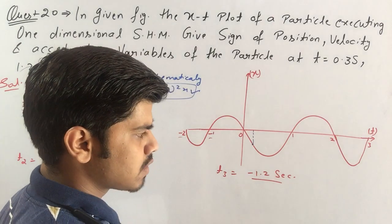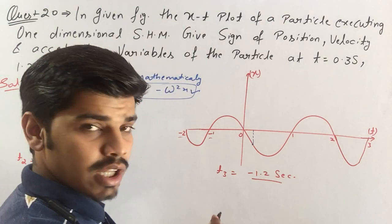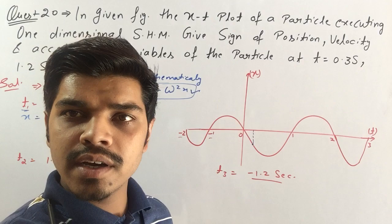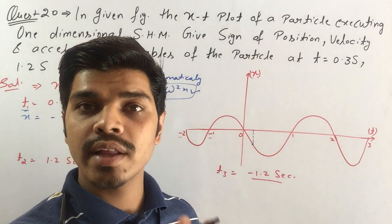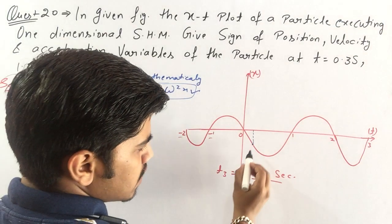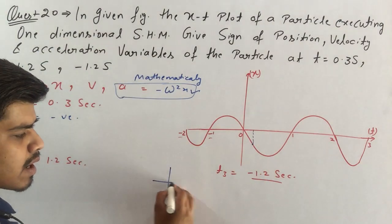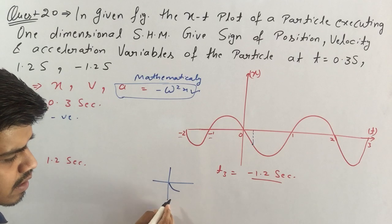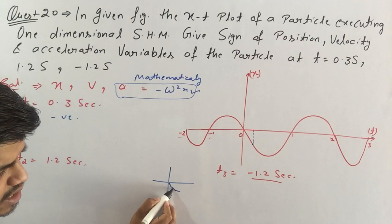What about v velocity? Velocity, see in position time graph if we take slope, that gives us velocity. I'll take slope. I'll show you in the graph by taking these points.